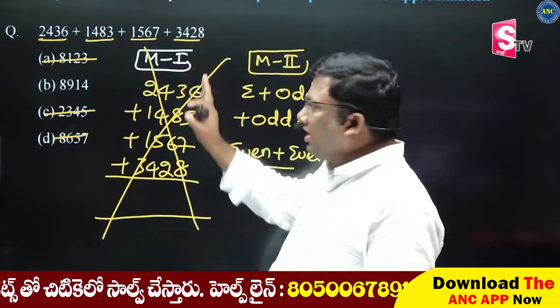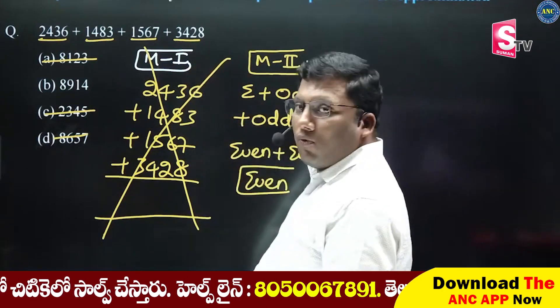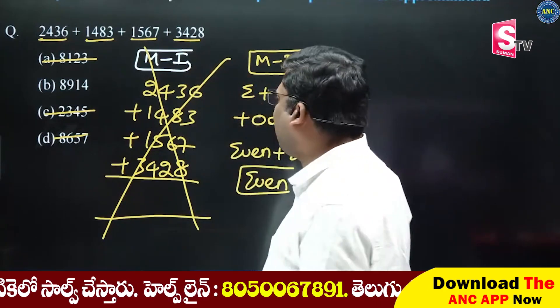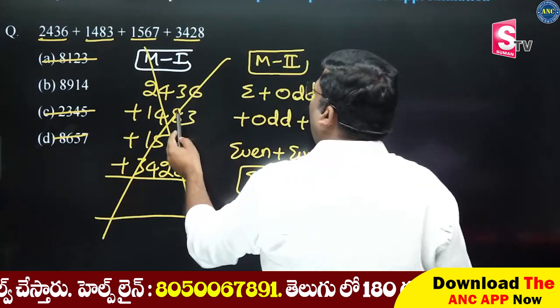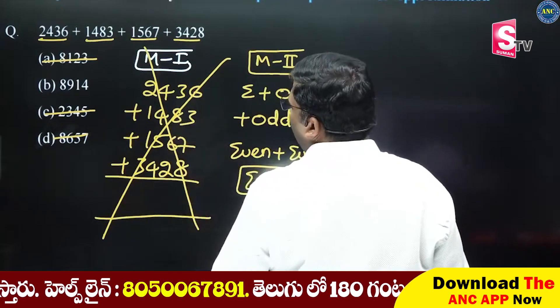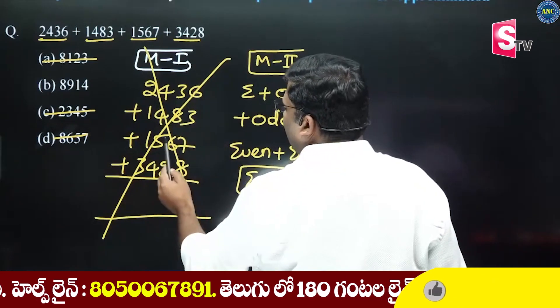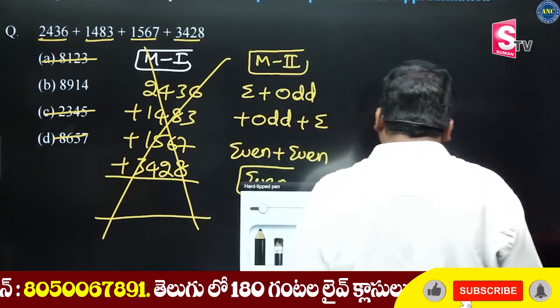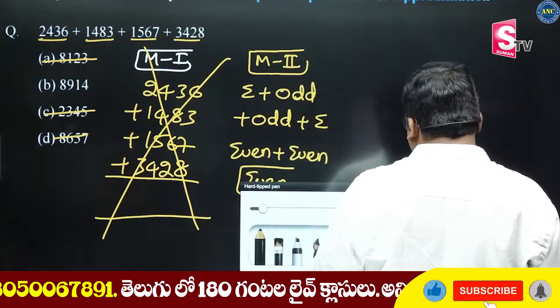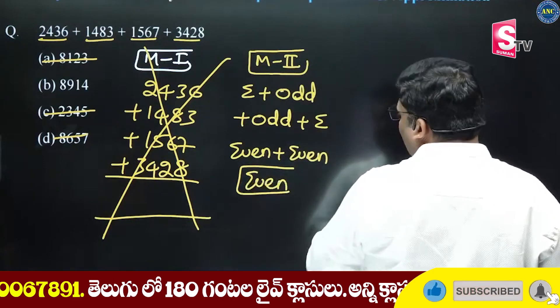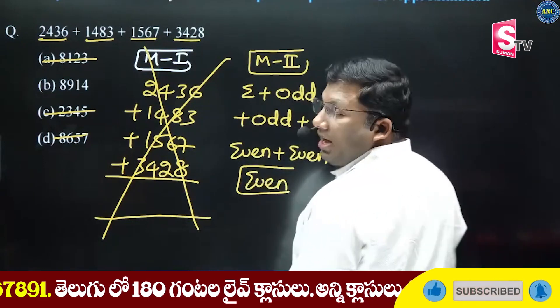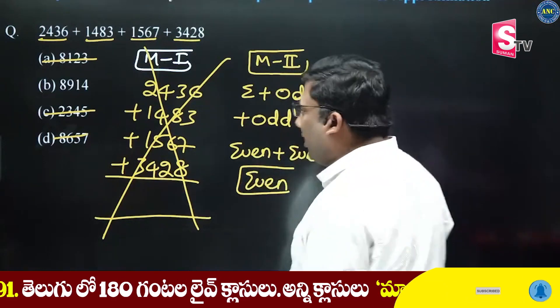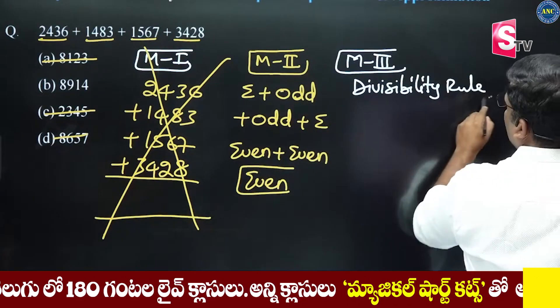2436 — even number. 1483 — odd number. Even plus odd equals odd. Even plus odd equals odd. Odd plus odd equals even. I hope the logic is clear. The answer should be an even number.